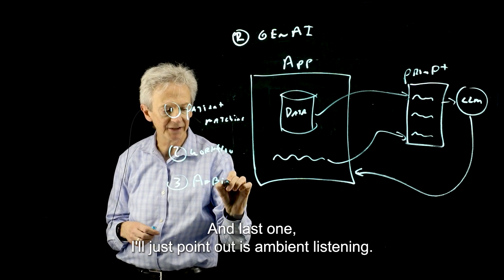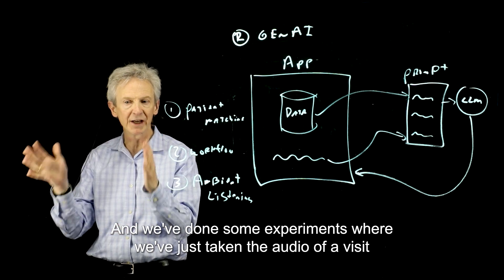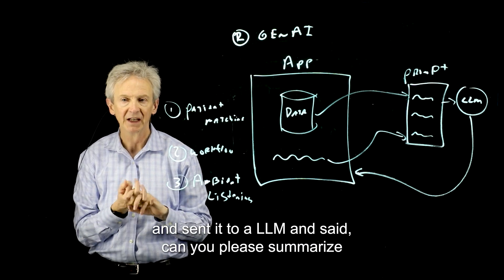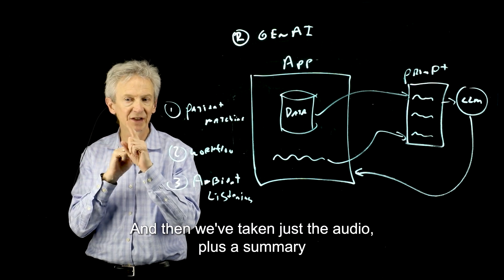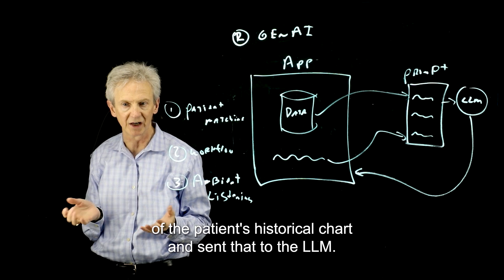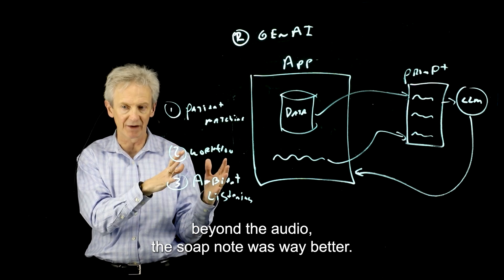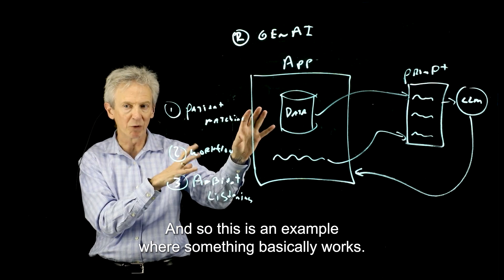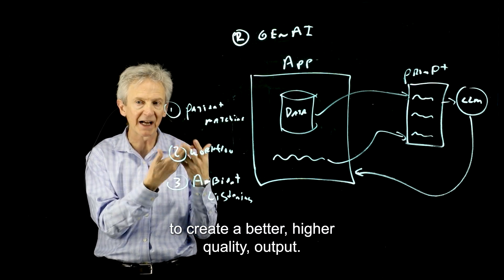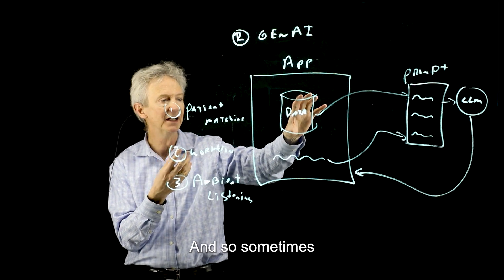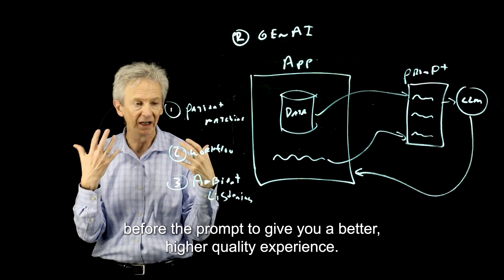And the last one I'll just point out is ambient listening is this great use case for Gen AI. We've done some experiments where we've just taken the audio of a visit and sent it to an LLM and said, can you please summarize this visit or write me a SOAP note or that sort of thing. And then we've taken just the audio plus a summary of the patient's historical chart and sent that to the LLM. And in the second case where you had more information beyond the audio, the SOAP note was way better. And so this is an example where something basically works. You can send an audio, get a summary of that visit, but you can enhance it with your own data to create a better, higher quality output. And so sometimes you can think about more data sources that you can send to pack into this prompt to give you a better, higher quality experience.